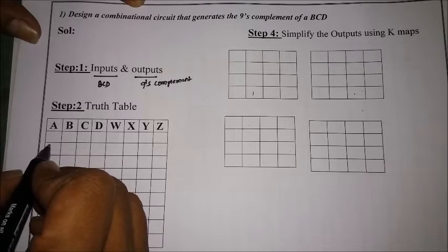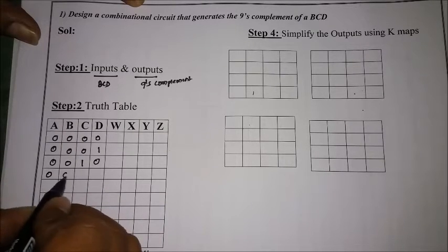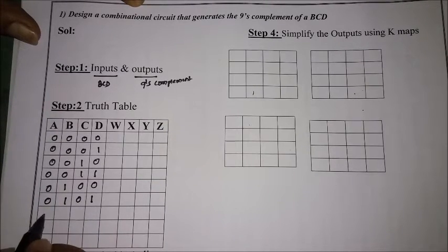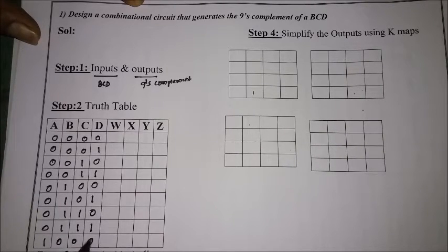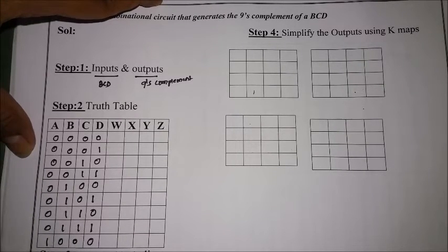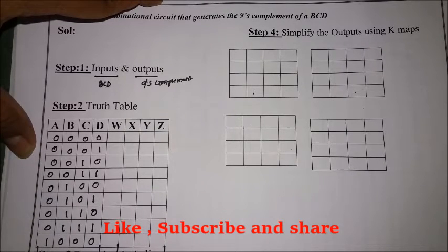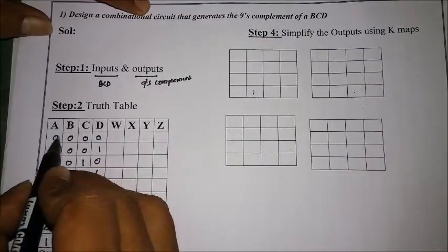Once inputs and outputs are identified, the second step is the truth table. BCD is nothing but expressing each digit of the given number in four-bit binary. We are taking zero to nine. So I am writing the BCD entries for zero, one, two, three, four, five, six, seven, eight, and nine. The entries from ten through fifteen are not valid BCD — those will be don't care entries. My intention is when a BCD input is given, I want to convert it to the 9th complement.